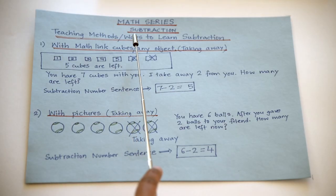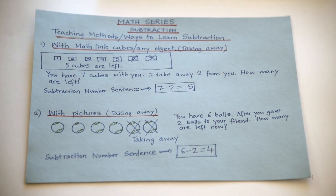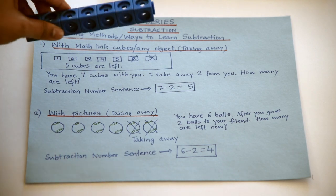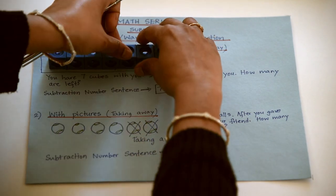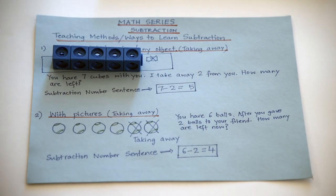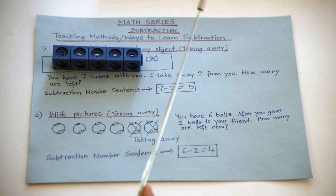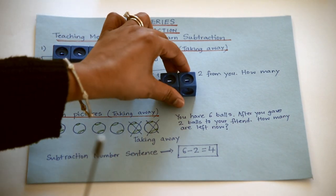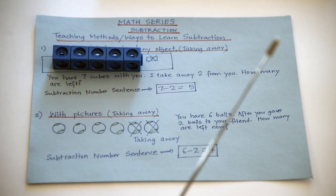Now let's learn various ways to do subtraction. The first is with math link cubes or any other object. Ishaan, you have seven math link cubes. If I take away two, how many do you have? Five. And the subtraction number sentence is seven minus two equals five.